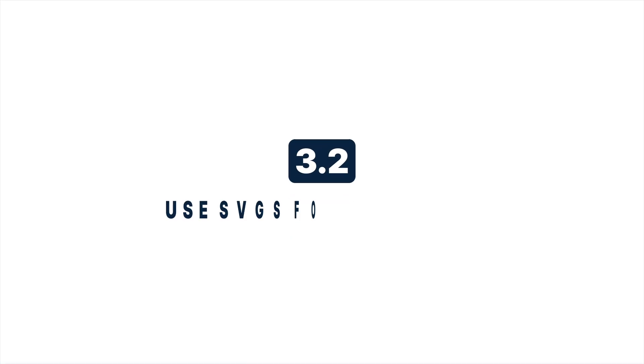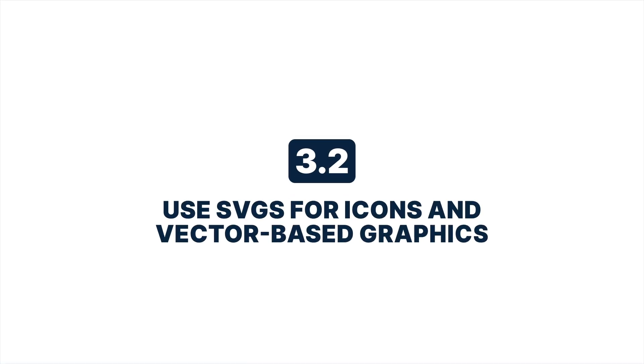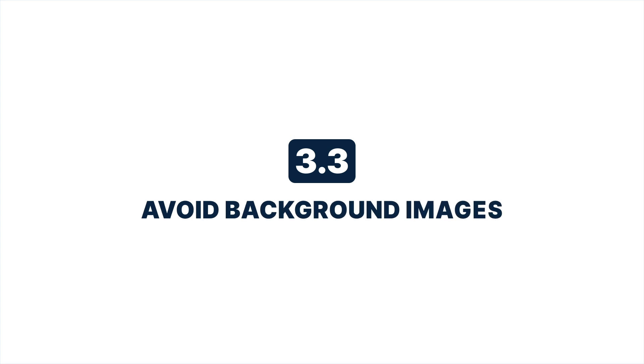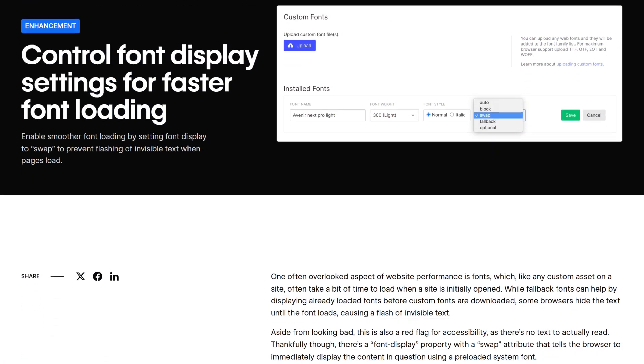Second, use SVGs for icons and vector-based graphics, because they scale infinitely without increasing file size. And third, avoid background images when possible, since they don't lazy load properly and that will also decrease initial website load speed and, therefore, your conversions. When you've optimized your images, move to fonts.